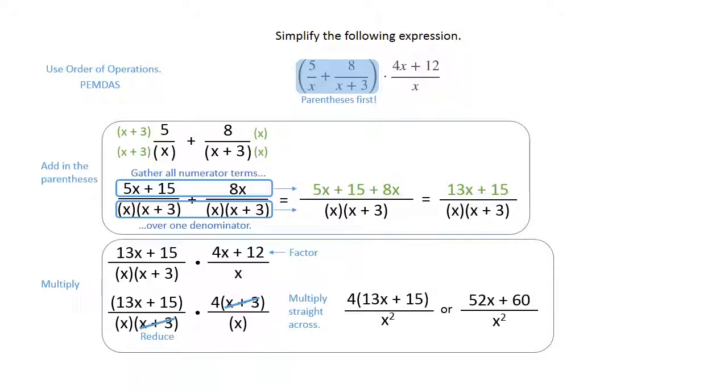Or you can distribute the 4 and have 52x plus 60 over x squared. Either of those is acceptable as a final answer.